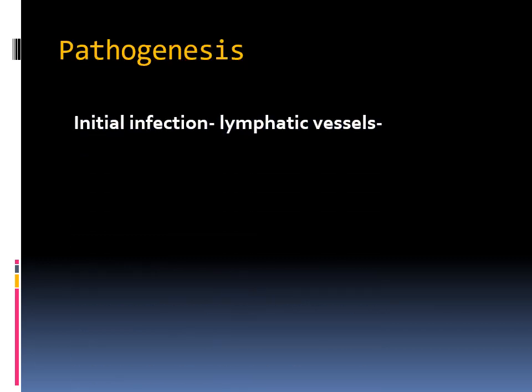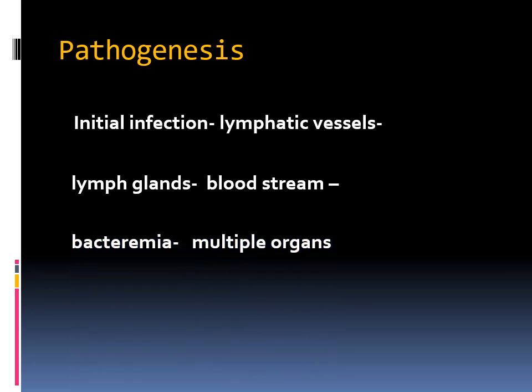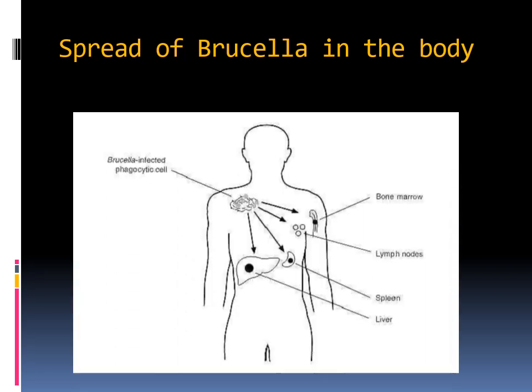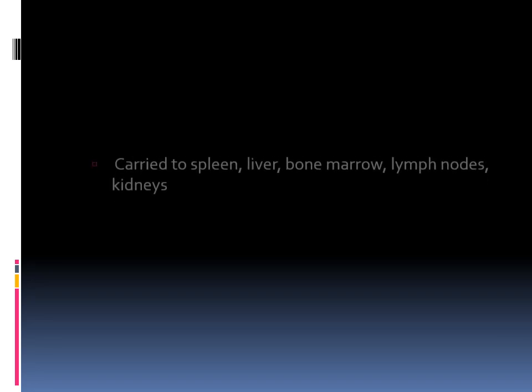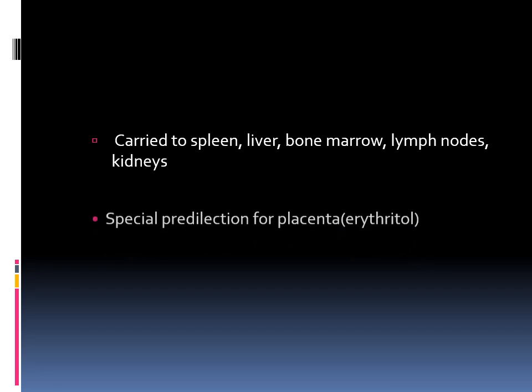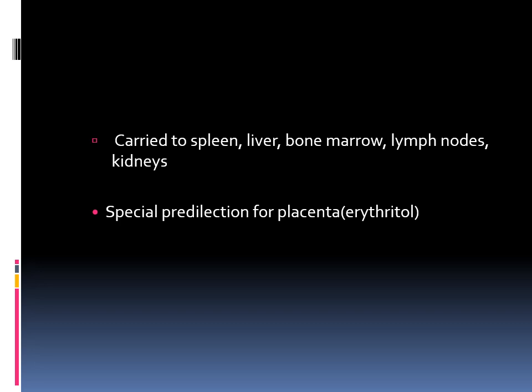The disease begins with initial infection, then spreads to the lymphatic vessels, from there to the lymph glands, then into the bloodstream, causing bacteremia, which spreads the pathogen to multiple organs. Brucella infects phagocytic cells and the infection spreads through the reticuloendothelial (RE) system — which includes bone marrow, liver, and spleen. Because of the bacteremia, the genitourinary system, musculoskeletal system, and CNS are also involved. The bacteria also have a predilection for the placenta due to their affinity for erythritol.